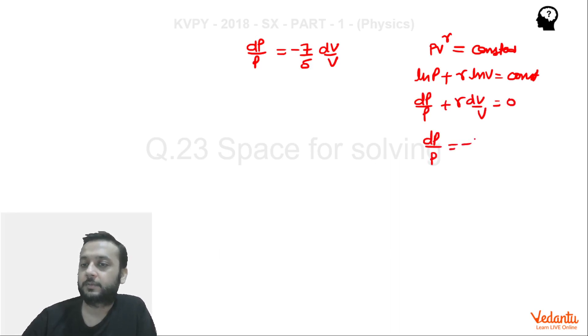So from here you can see that dP/P is equals to minus gamma dV/V. So gamma ki value here is 7/5. That means if you can compare, PV ki power gamma constant, so PV ki power 7/5 constant, correct.